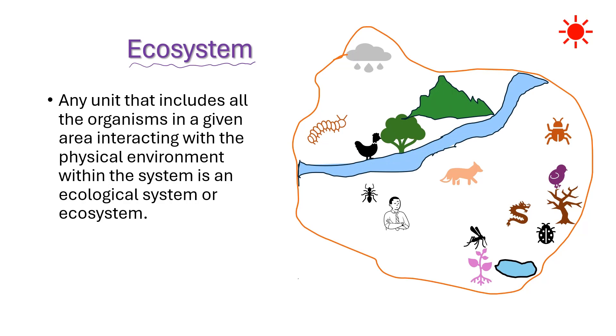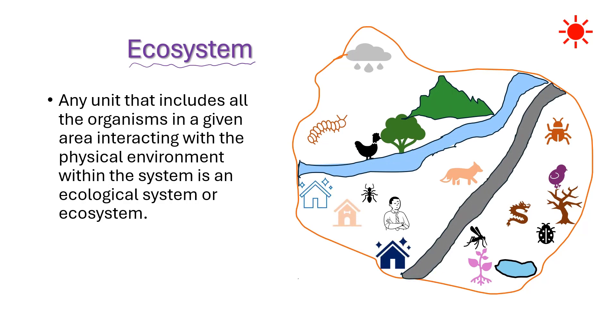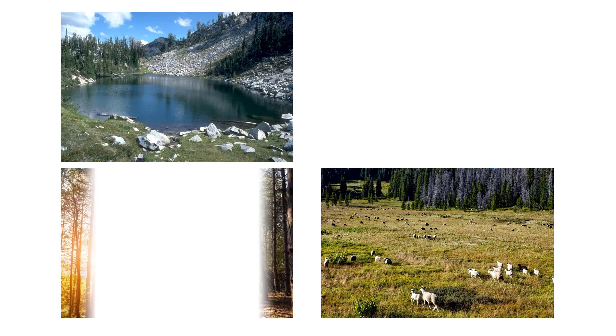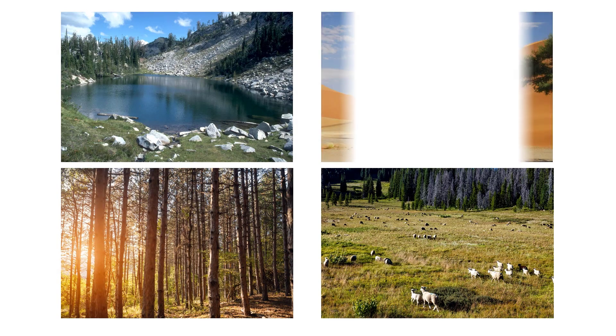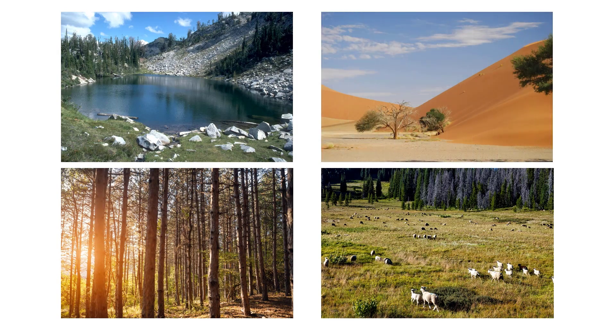Ecosystems can be of many sizes and complexities, ranging from small ponds, forests, and grasslands to vast oceans and entire biomes. Examples of some ecosystems are Pond Ecosystems, Grassland Ecosystems, Forest Ecosystems, Desert Ecosystems, and so on.